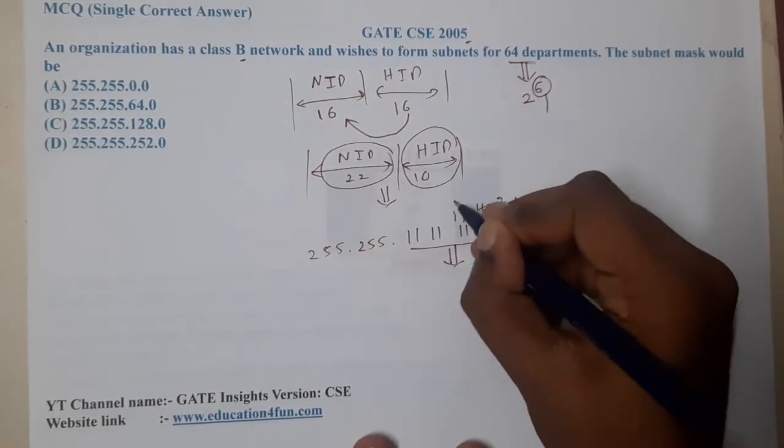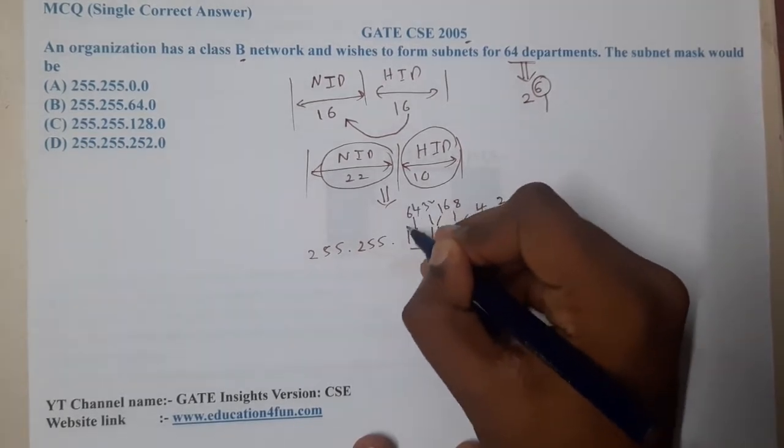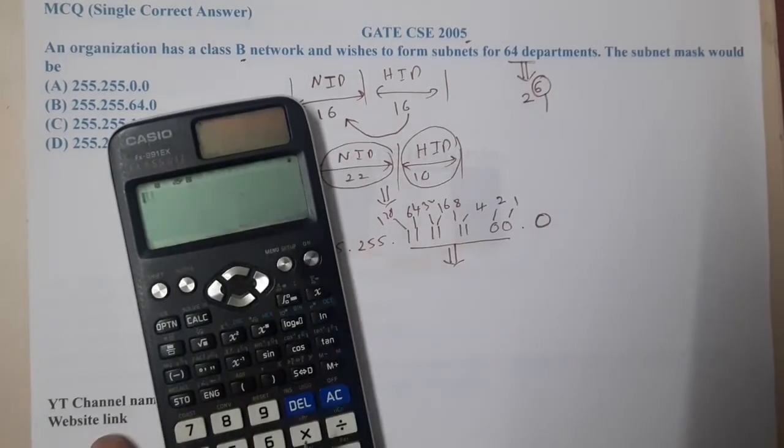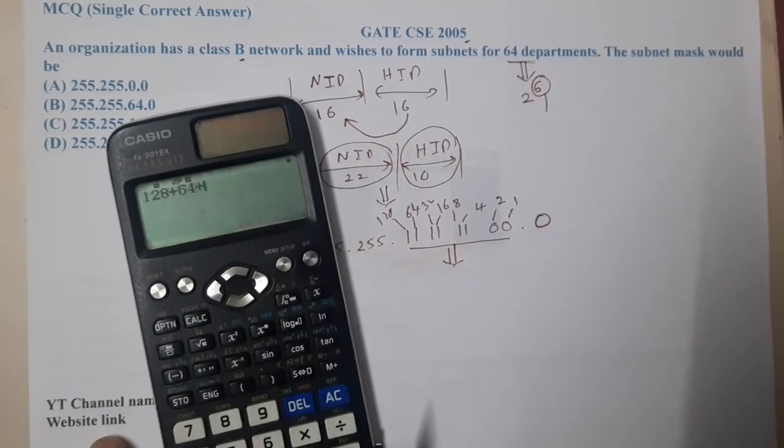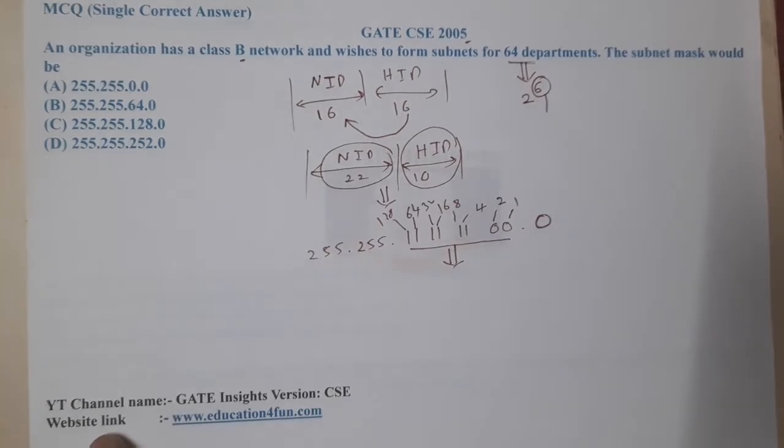Let us take the calculator now. So 128 plus 64 plus 32 plus 16 plus 8 plus 4, which equals to 252.